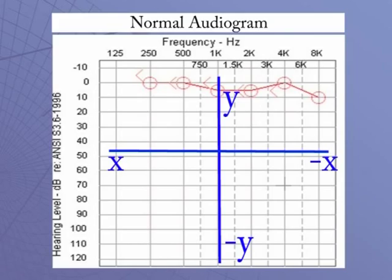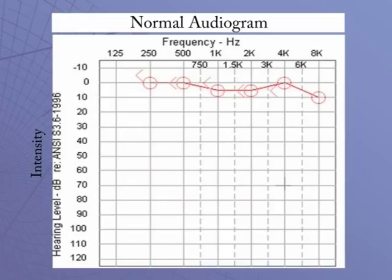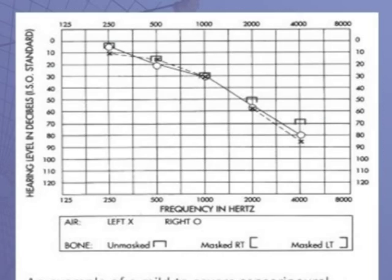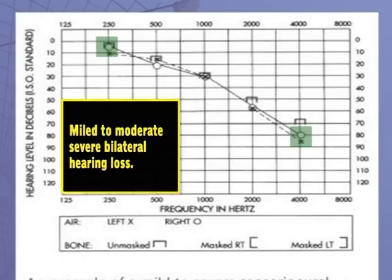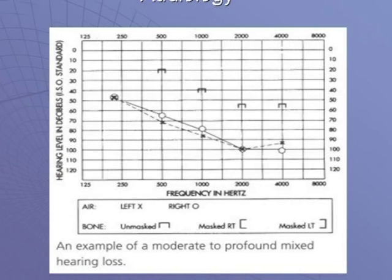Hamara normal audiogram — frequencies on the x-axis, y-axis mein intensity. Yeh right ear designate kar raha hai laal mein normal hearing thresholds for the right ear, aur bone conduction ke responses bhi normal threshold ko represent kar rahe hain. Agla audiogram slight to moderately severe hearing loss bilateral ko represent kar raha hai — circles right ear ko represent karte hain, crosses left ear ko, aur dono bilateral slight to moderately severe sensory neural hearing loss dikhate hain.